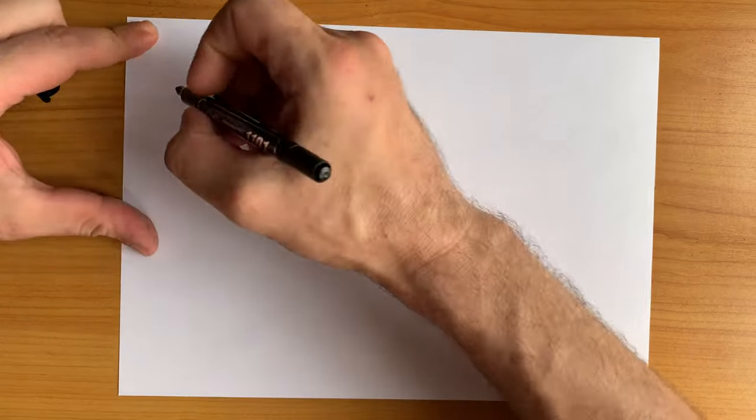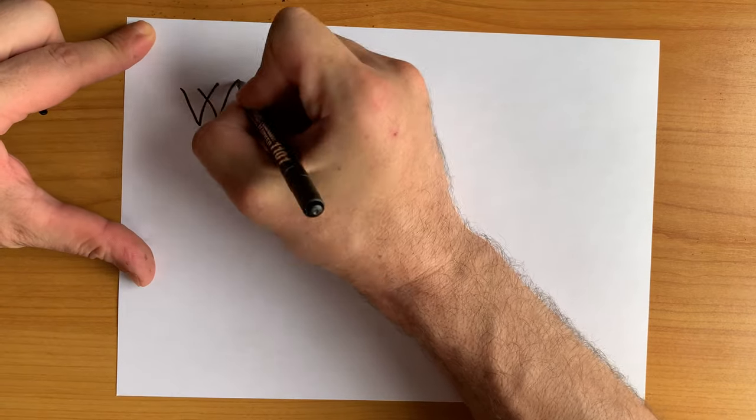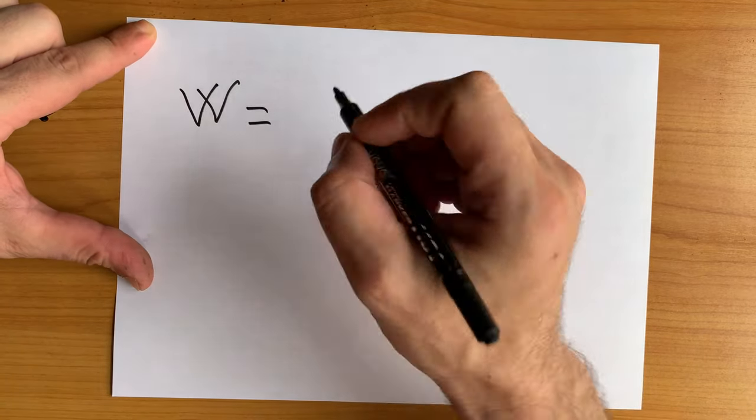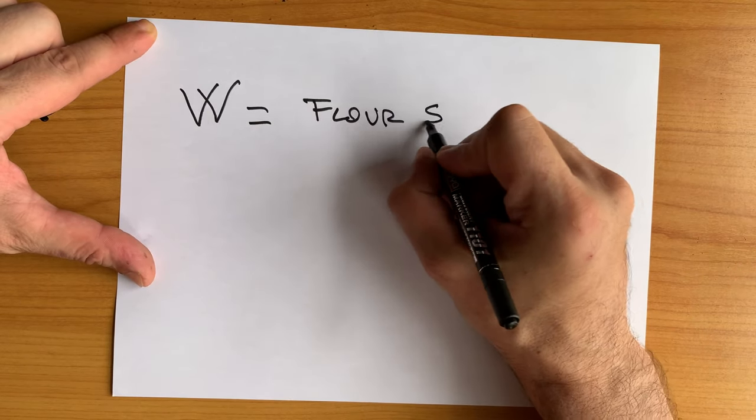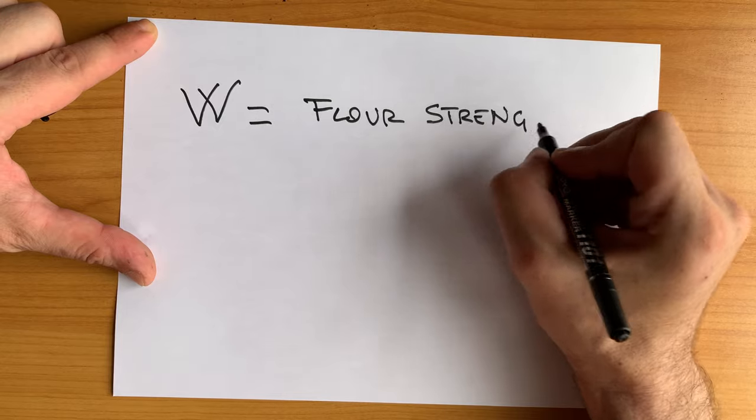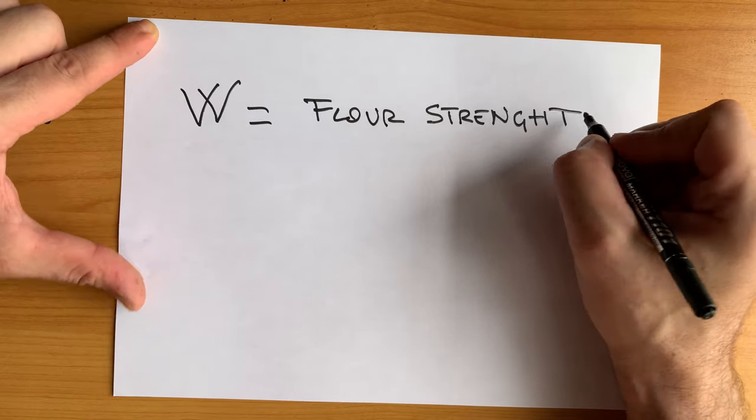When we buy flour, one of the most important values that you need to know is not mentioned in the bag. This value is called W. W is the strength of the flour. It's expressed in numbers and it goes from 80 to 350. Lower is the W and lower will be the strength of the flour.